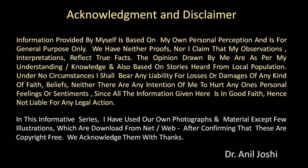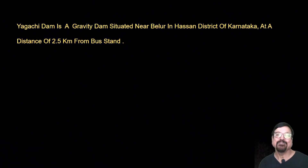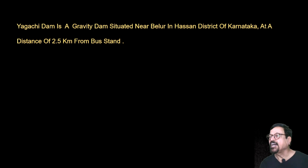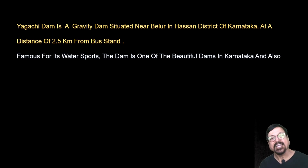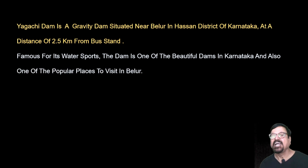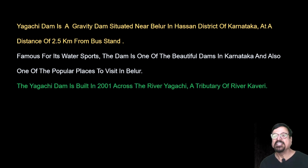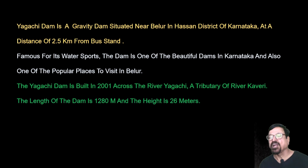Yagachi Dam is equidistant from Chikamangaluru as well. It is a gravity dam situated near Belur in Hassan district of Karnataka, at a distance of 2.5 kilometers from Belur town, so you will have to take a commercial vehicle or auto to reach this site. It is famous for water sports, and is one of the most beautiful and popular dams in Karnataka to visit near Belur.